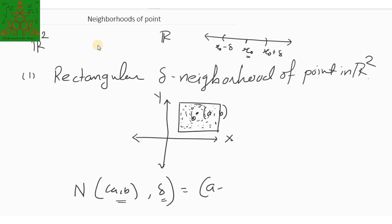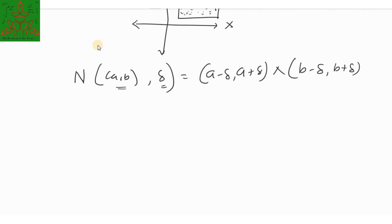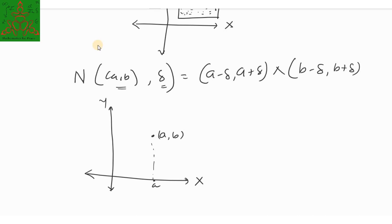The rectangular neighborhood N_delta(A, B) is defined as the Cartesian product (A minus delta, A plus delta) cross (B minus delta, B plus delta). Geometrically, on the x-axis you have the point A, with A minus delta to the left and A plus delta to the right, and on the y-axis you have point B with B minus delta below and B plus delta above.